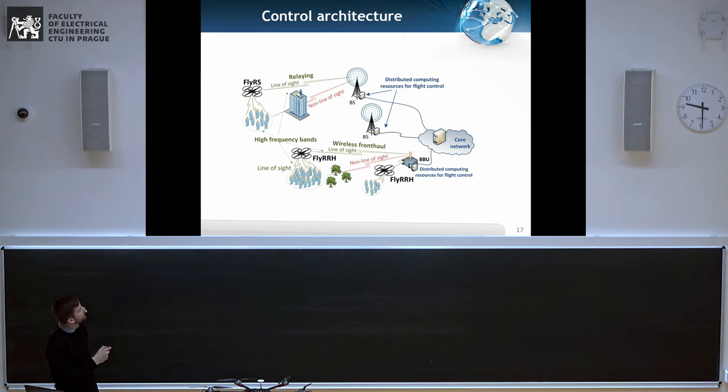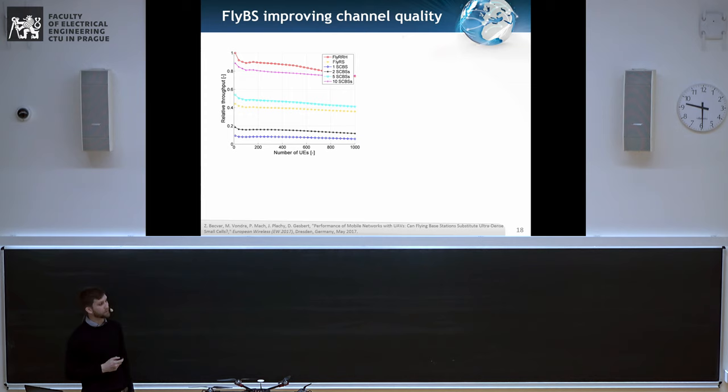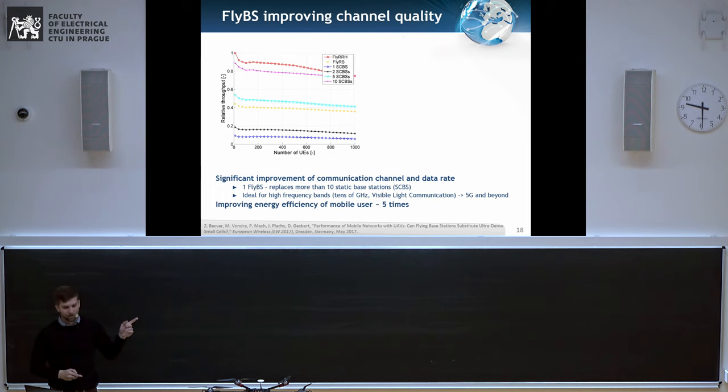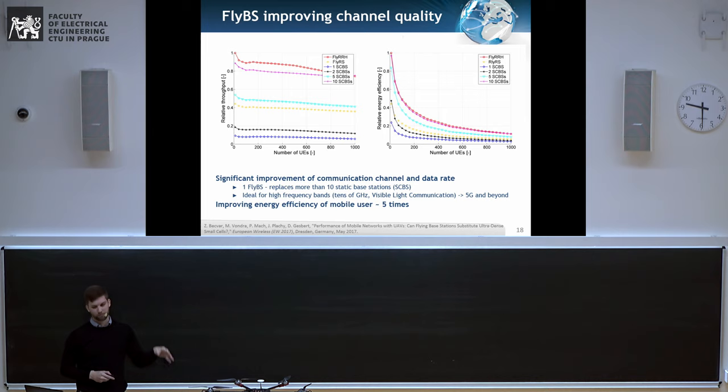And how to exploit it? Again, core network, some baseband units, base stations, and the flying either relay station or the actual base station itself. So what you do, you can either deploy it as a relay station, kind of like mirroring the signal or standalone base station. And I will show you a bit of results to prove that it makes sense. We have a number of users ranging from zero to 1,000 and the relative throughput. And it can actually replace up to 10 base stations. And also, it can improve energy efficiency.